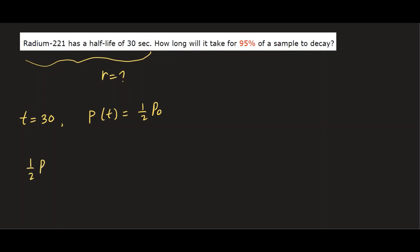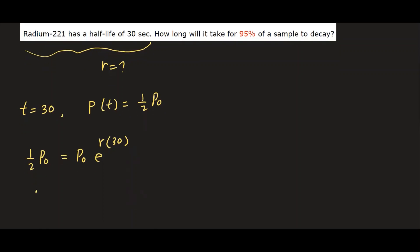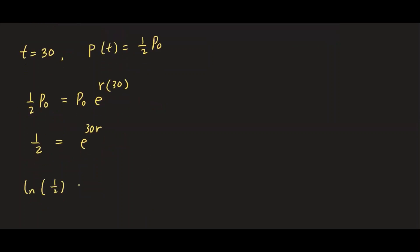We write: (1/2)·P₀ = P₀·e^(30r). Dividing both sides by P₀: 1/2 = e^(30r). Taking natural log: ln(1/2) = 30r. Dividing by 30: r = (1/30)·ln(1/2). I'll keep it in this form — you'll see why shortly.